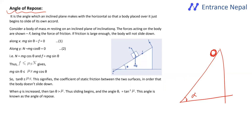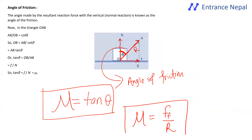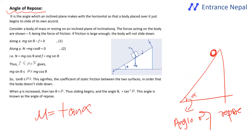The angle of repose is the same concept: μ = tan α. The angle of friction equals the angle of repose. This completes the topic of friction.